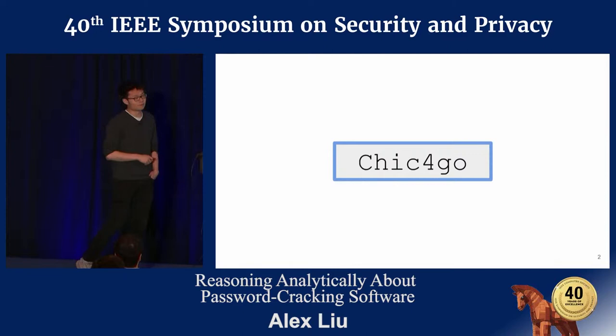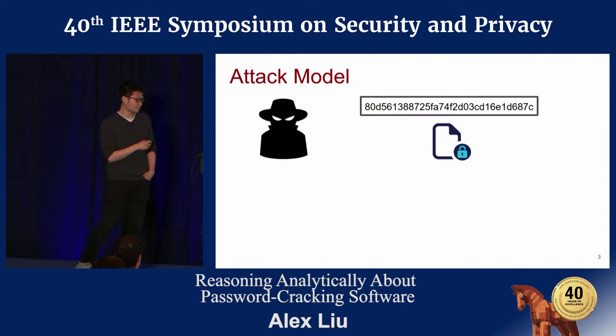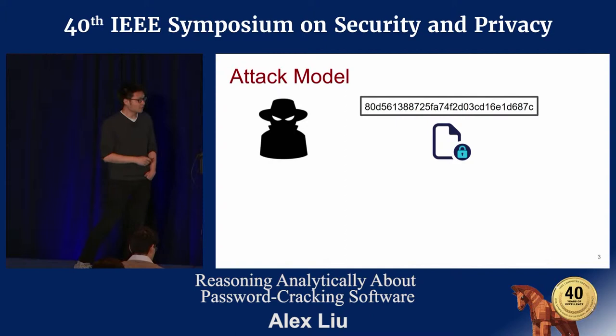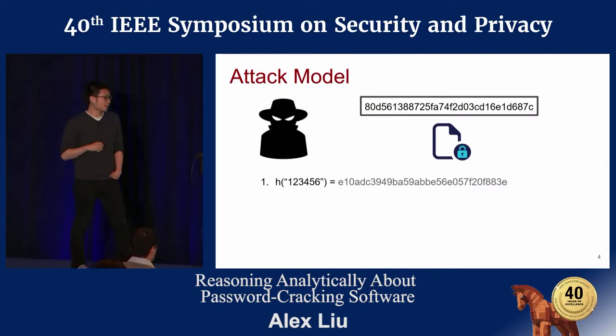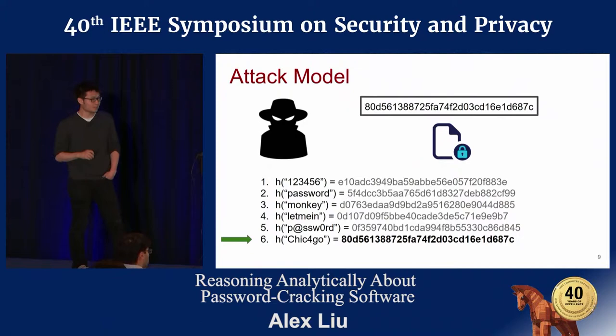One type of attack we need to worry about is offline guessing — whether hackers are trying to crack a hash of a password or a password-protected file. What they would do is make a guess, hash it, and check their guess, for example guessing 1-2-3-4-5-6 and comparing. They keep doing this until there's a match, so now they know the password is Shikforgo.